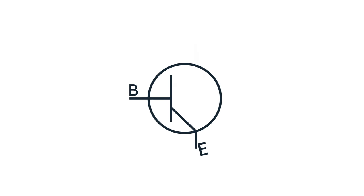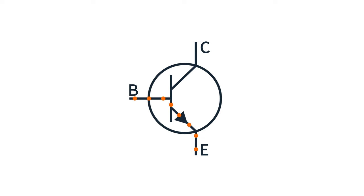To understand this, we first need to know a little bit about bipolar junction transistors or BJTs. There are three terminals: a base, emitter, and collector. You apply a voltage on the base and a little bit of current flows from the base to the emitter, but more importantly, this allows a larger amount of current to flow from the collector to the emitter at the same time.